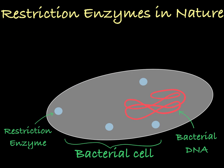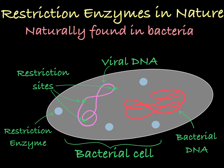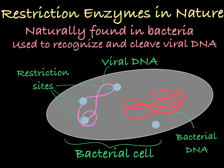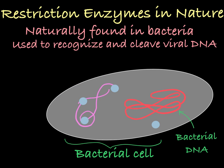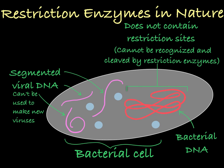Restriction enzymes are naturally found in bacterial cells. These cells use their restriction enzymes to cut apart DNA that has been injected into them by viruses. Cutting up the viral DNA prevents the virus from successfully reproducing within the bacterial cell. The key is for the restriction enzymes to recognize sites that are only found in viral DNA and not in the bacterial DNA — the bacteria wouldn't want its own DNA to be cleaved.